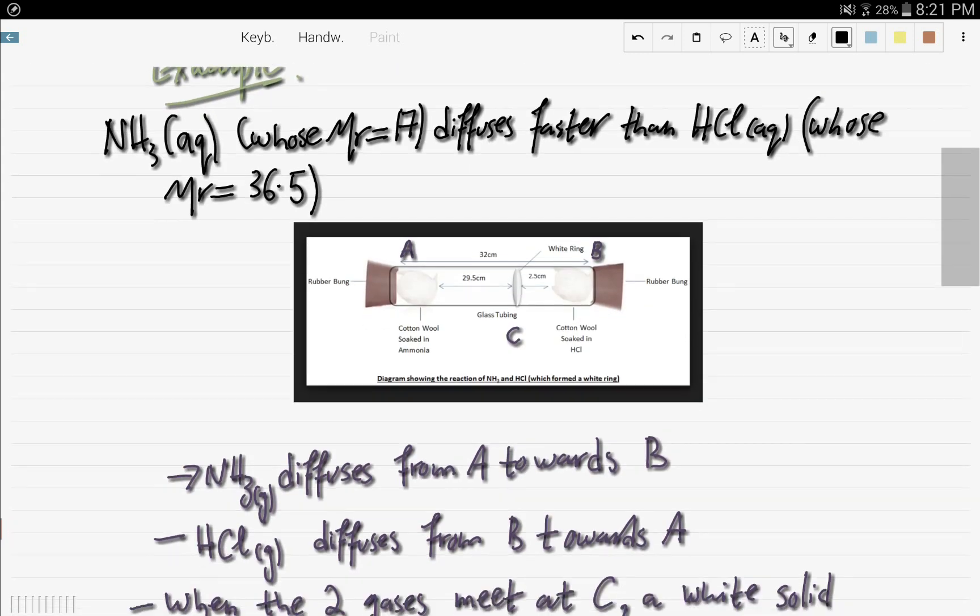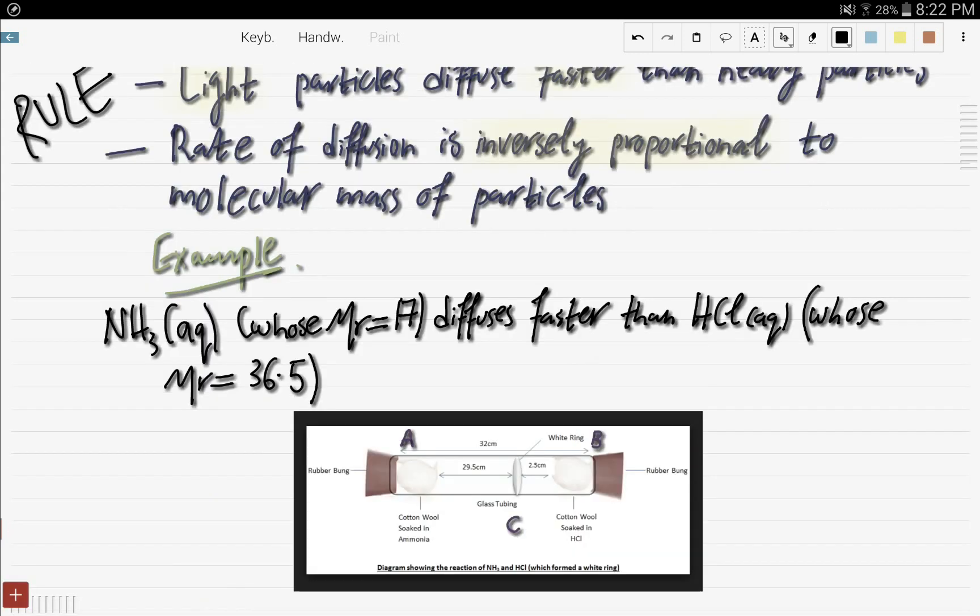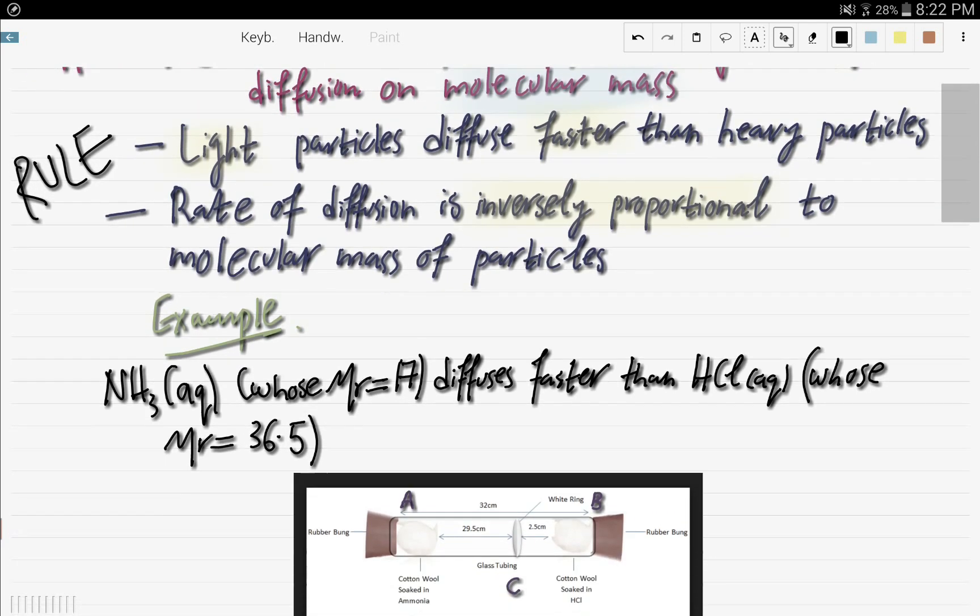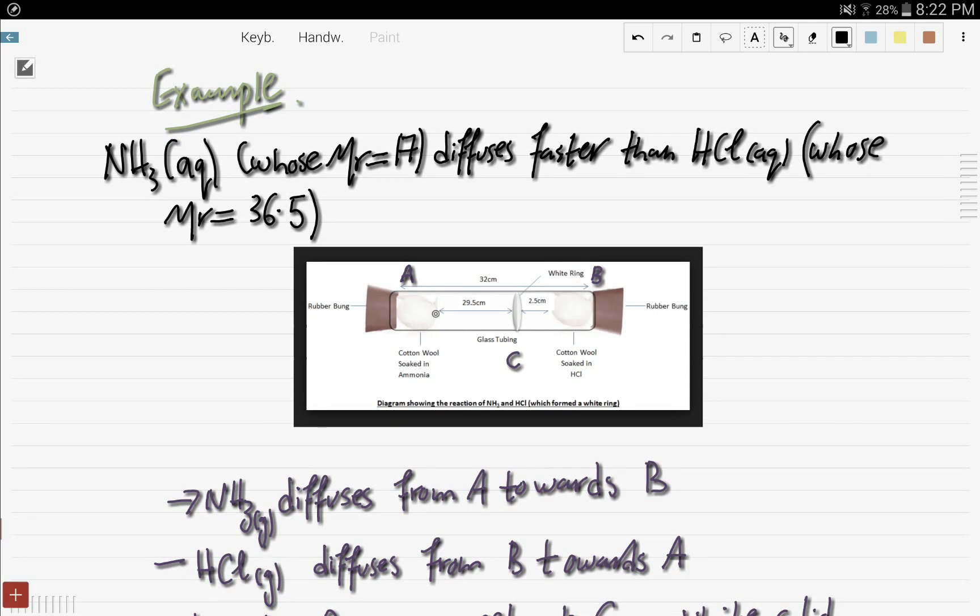So here is an example, a very famous example, as an evidence for this rule. That is the dependence of the rate of diffusion on the molecular mass. We have here cotton wool soaked in ammonia, NH3 aqueous. And we have a cotton wool soaked in HCl aqueous, hydrochloric acid. And so we know that ammonia has an MR 17. Calculating the MR will be discussed in later videos in the chemical calculations chapter. But for now, just know that the MR, the molecular mass is 17, and that of HCl is 36.5.